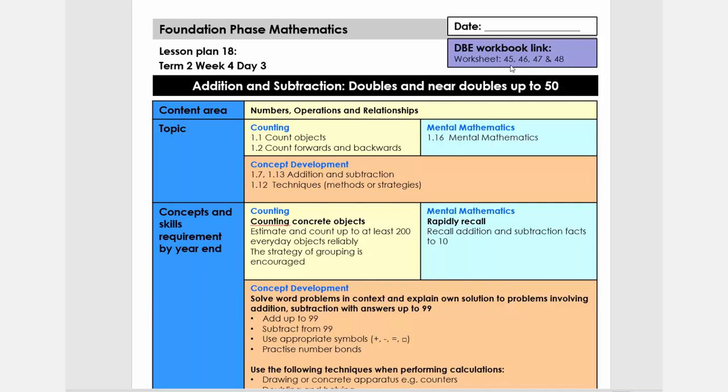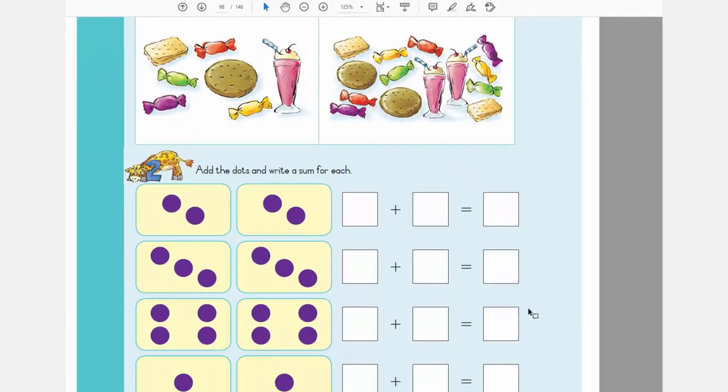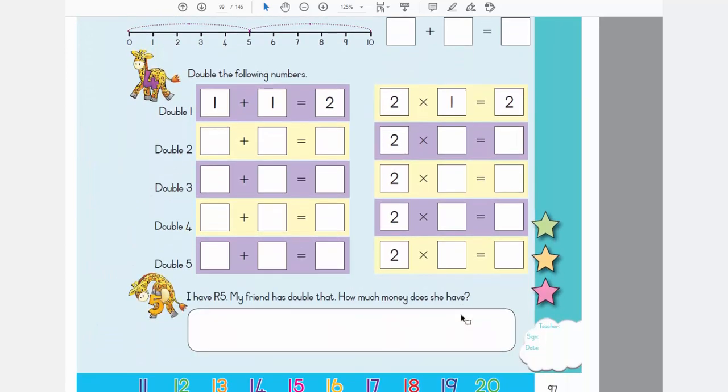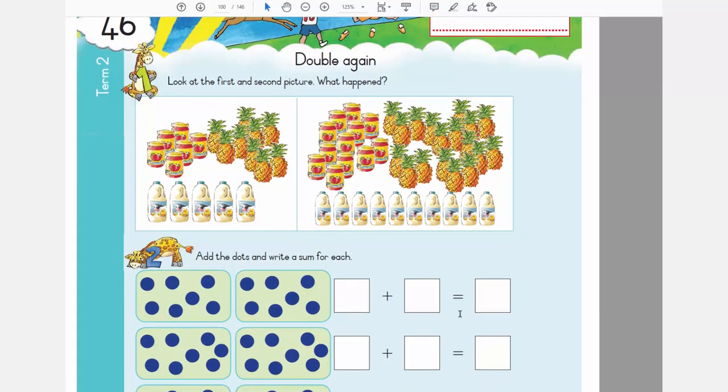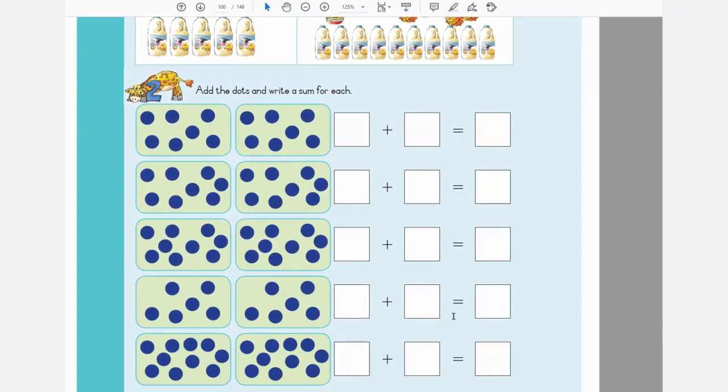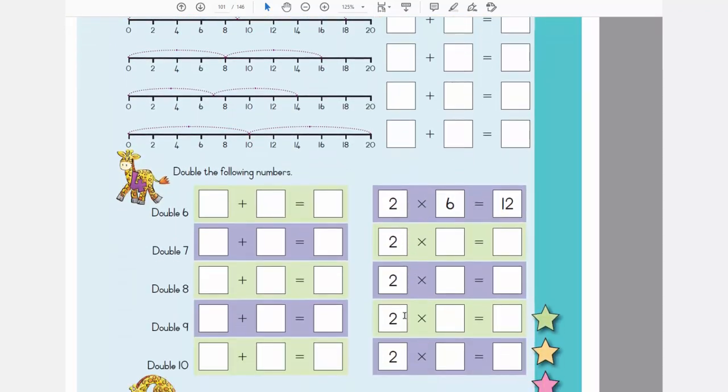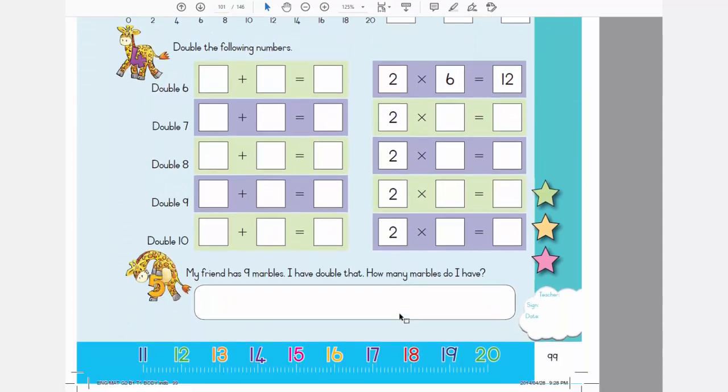There's also linked to worksheet 45, 46 to 48 in the DBE workbook. So I'm quickly going to show you. So we've got some double work there and number lines. We've got more double work.